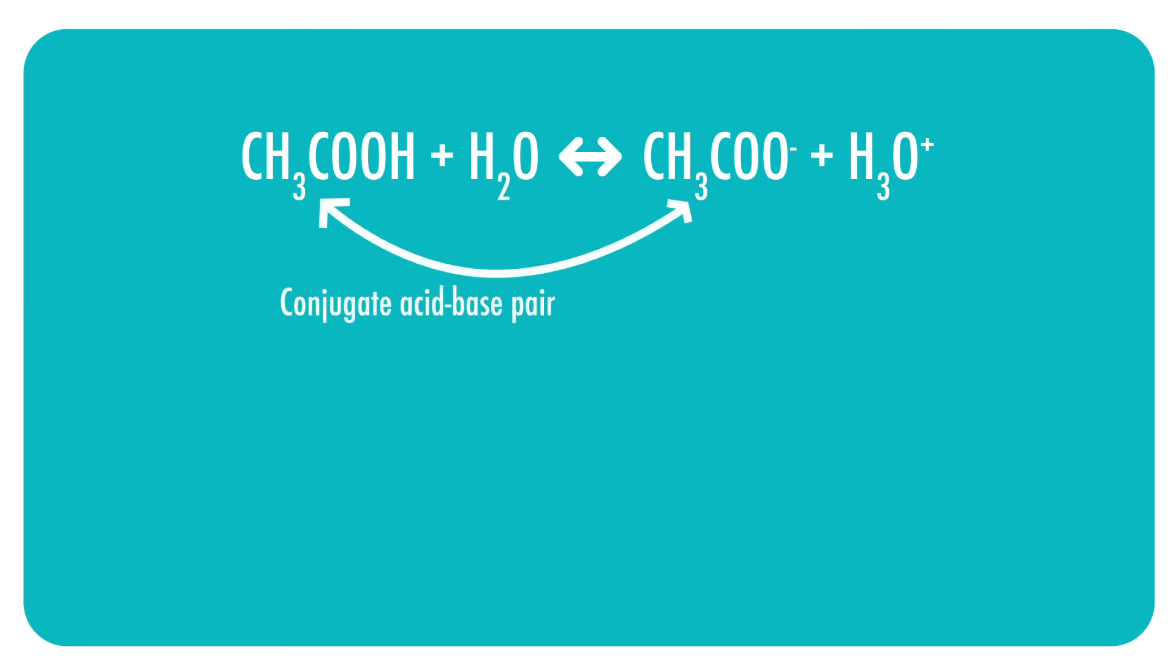Now the base is actually going to be the water that accepts an H plus from the acetic acid. So it is going to be the H2O on the left side. We know this because just like before, water can act as both an acid and base. And in this scenario, it is acting like a base. And finally, the conjugate acid pair of the water will have one more H than the original molecule and therefore be H3O plus.